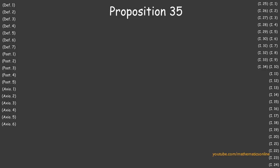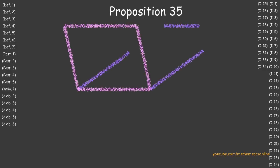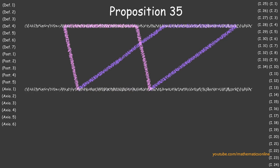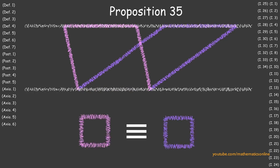In Proposition 35, we prove that if two parallelograms have a base in common and are in the same parallel lines, then the parallelograms must be congruent.